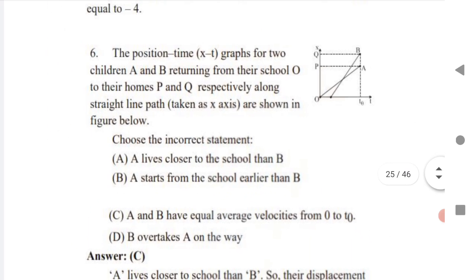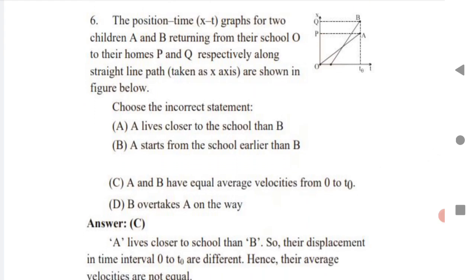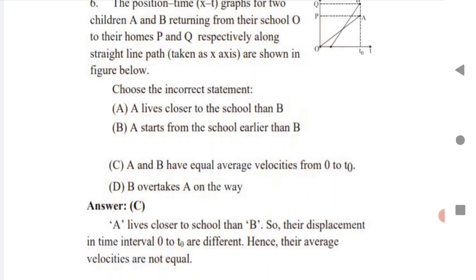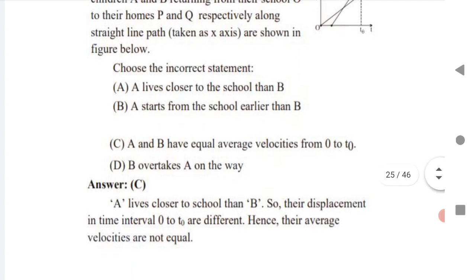Sixth question: a position-time graph shows two children A and B returning from school to their homes P and Q respectively along a straight line. Choose the incorrect statement. From the graph: A lives closer to school than B — correct; A starts from school earlier than B — correct. The wrong statement is that A and B have equal average velocity from 0 to t₀ — this is incorrect. B overtakes A on the way — this is correct. So C is wrong.